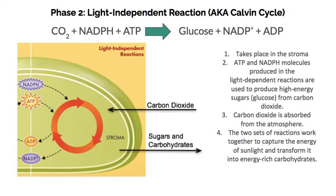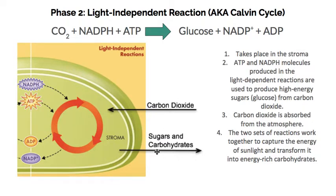Phase one, your light-dependent reaction, remember it took place in the thylakoid. Sunlight was absorbed. NADP+ and ADP in the cell are converted to ATP and NADPH. Water was required as a source of electrons and hydrogen ions, and oxygen was released as a byproduct. Your second stage was the light-independent reaction, also called the Calvin cycle, which took place in the stroma. ATP and NADPH were used to produce high-energy sugars such as glucose from carbon dioxide, and both of the reactions work together.